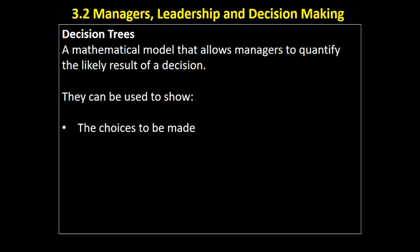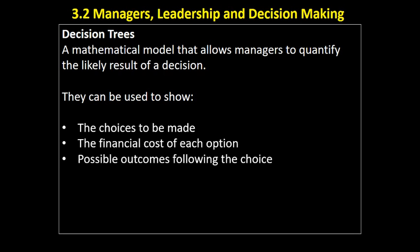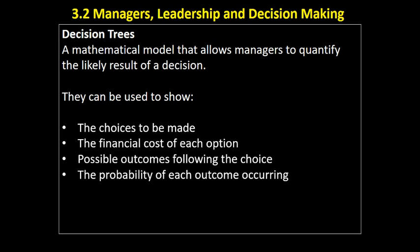A decision tree is used to show the choices that can be made — we could take option A or option B. It shows us the financial cost: how much is it going to cost us to do option A, how much for option B? We can see the possible outcomes following each choice — success or failure, high sales versus low sales. We also attach a probability to each outcome; for example, we think there's a 70% chance of high sales but a 30% chance of low sales. We'll show that on our decision tree.